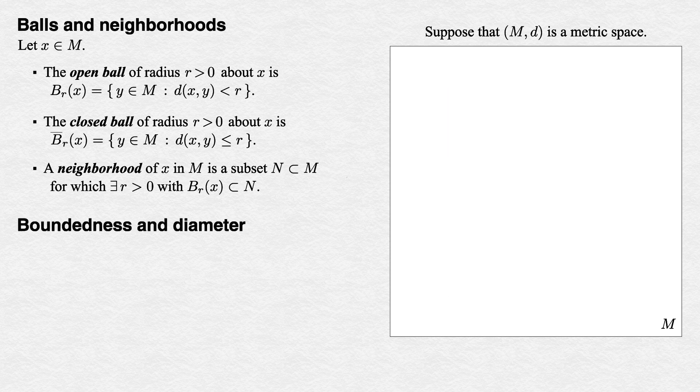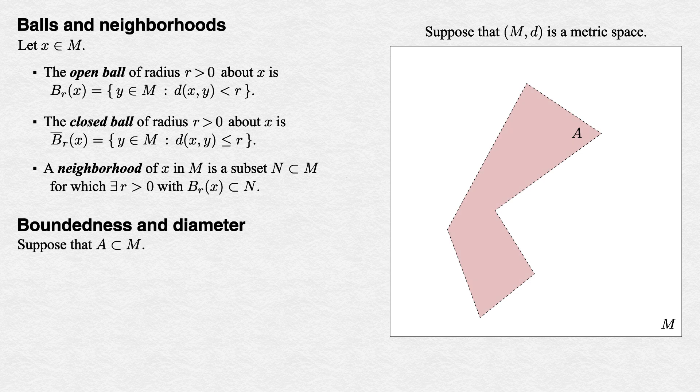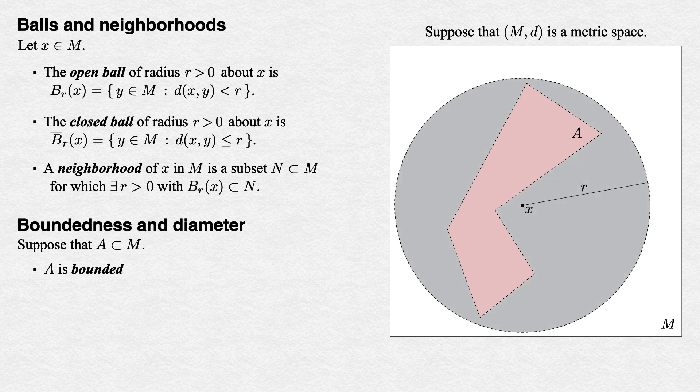Now we'll discuss two other concepts relating to the size of a subset A of a metric space. First, to say that A is bounded means that it is contained in some open ball in M, having some finite radius. Symbolically, A is bounded means that there exists x in M, and r > 0, these are the two parameters of an open ball, such that A is contained in B_r(x).